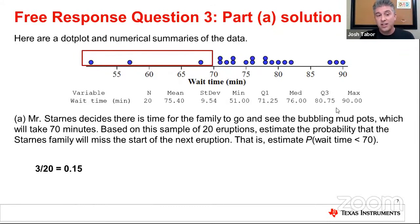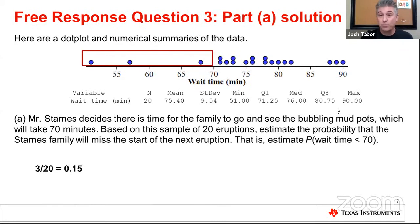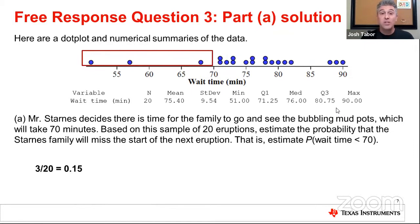Of the 20 data values collected, three of them were less than 70. So the estimate of the probability is 3 out of 20, or 15%, or 0.15. A tip: if a student only wrote 0.15 with no supporting work, it's very unlikely they'd get full credit. Circling those three dots on the graph is a great start, and writing the fraction 3 over 20 shows where that number comes from. Always show some work, no matter how simple the calculation.